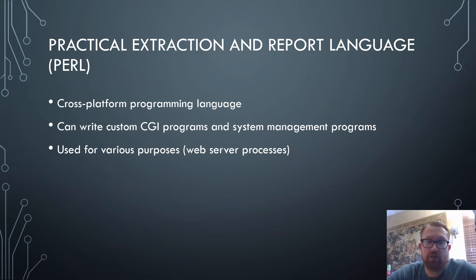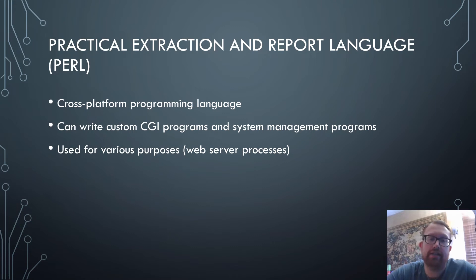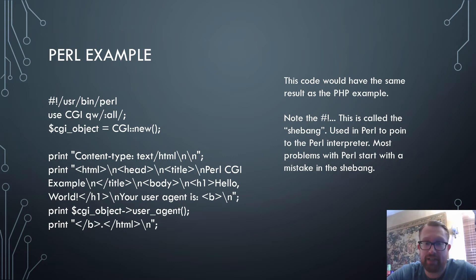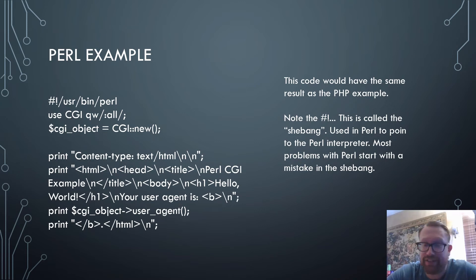Next is Perl — Practical Extraction and Report Language. It is a cross-platform programming language and can be used to create custom CGI programs and system management programs, and it's used for various purposes including web server processes. This is how Perl code looks — it would produce the same result as the PHP example. Notice the pound symbol and exclamation point that starts the code — this is called the shebang in Perl, and it's used to point to and start the Perl interpreter. Most problems with Perl start with a mistake in the shebang.